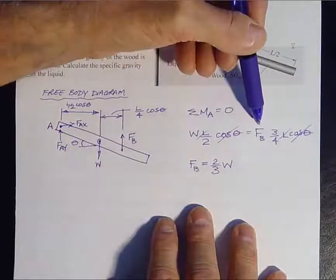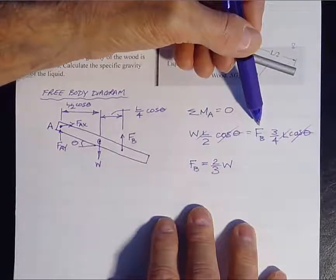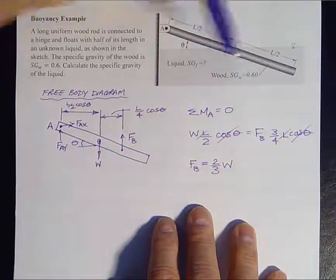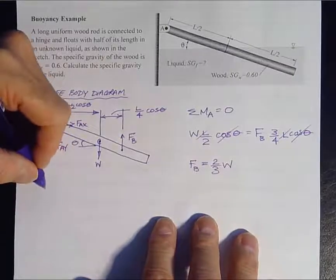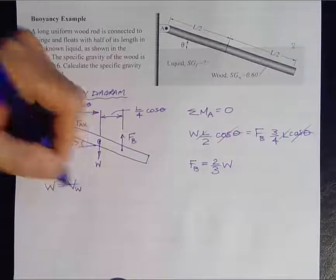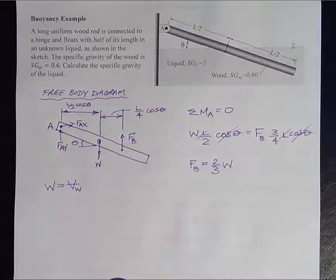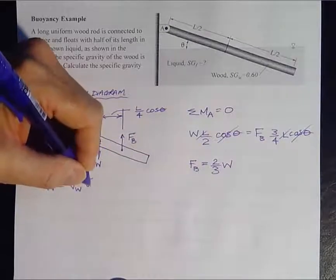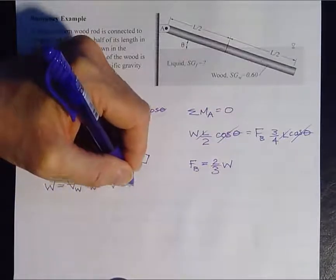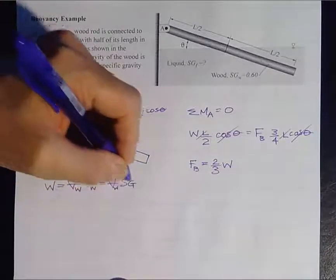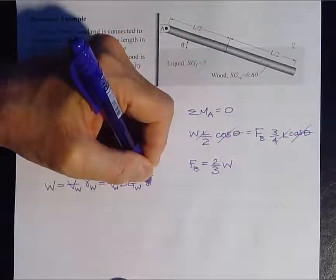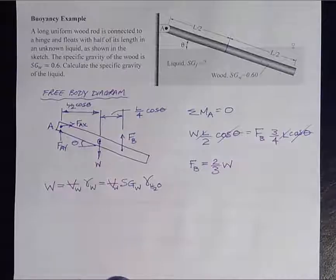So now we need to figure out what the weight and the buoyancy force terms are in terms of the specific gravity of the unknown fluid and the wood. So the weight is pretty straightforward. Let's do that first. The weight of the wood is just the volume of the wood, whatever the total volume of the wood is, times the gamma of the wood. Now I'm going to put that in terms of specific gravity. So that would be equal to the volume of the wood, specific gravity of the wood, which we know is 0.6, times the gamma of water, technically at 4 degrees C.